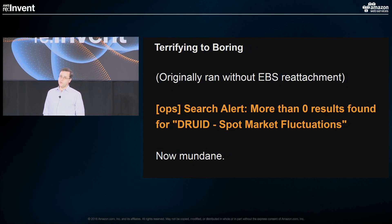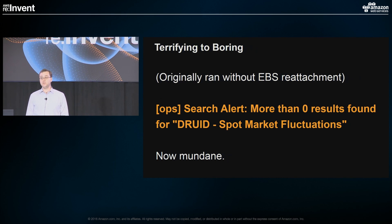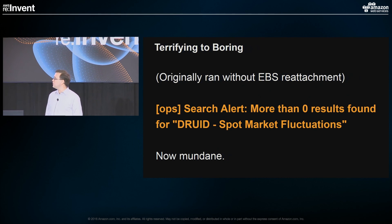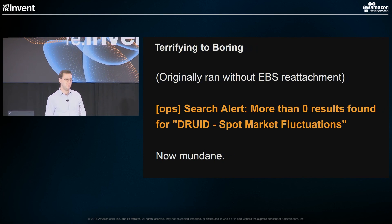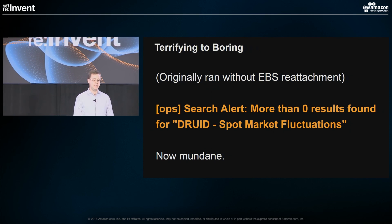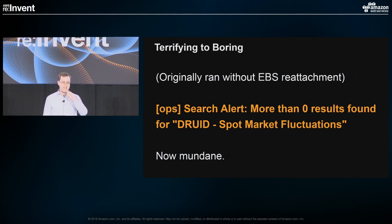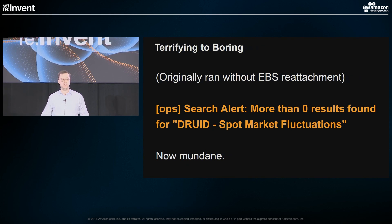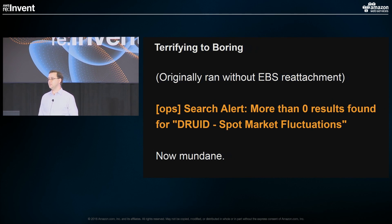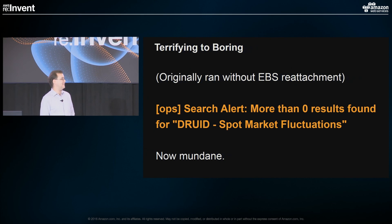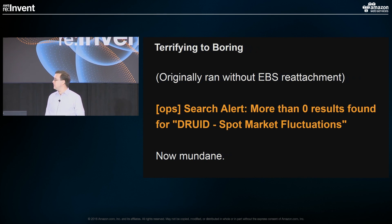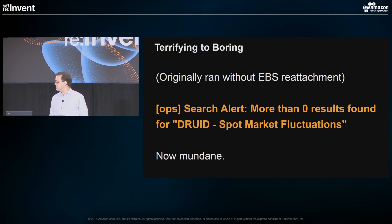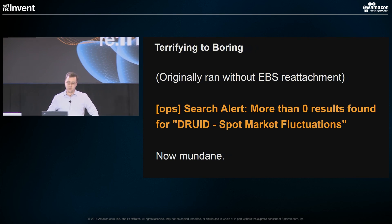Originally we ran Druid without using EBS reattachment, so every once in a while when we got one of those spot termination messages in our email, it was going to be an interesting day. But we now have EBS reattachment in place. We still get those messages, but they're just ignored. They were originally incredibly terrifying to get, but now it's just mundane — by the time we've noticed it happened, it usually has fixed itself. That's a very good problem to have.